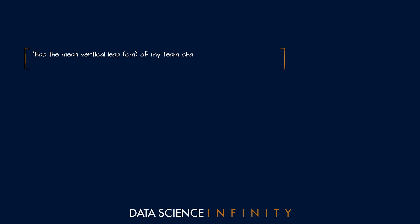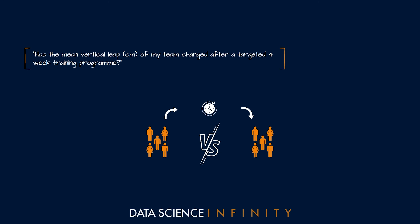Next: has the mean vertical leap of my team changed after a targeted four-week training program? Imagine you put in place a training program aimed at increasing vertical leap. You'd have a distribution of jumping heights for the 30 players before the program and a distribution after. We want to compare those before and after figures and understand whether any changes are statistically significant or just down to random noise. For this we'd use the paired t-test.